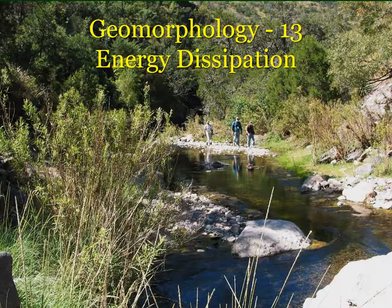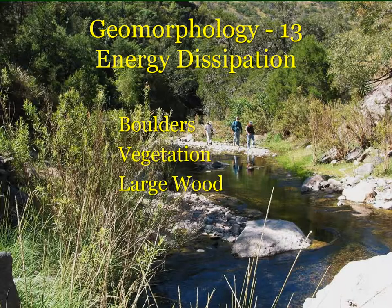Beginning the geomorphology part of the checklist, item 13 has to do with energy dissipation. This question asks whether there are enough energy-dissipating features to slow down the water during high flow events — such as boulders, vegetation, large wood, sinuosity, overflow channels, channel complexity, or channel roughness. You're evaluating whether there's enough of those features to do the job and slow down that water.